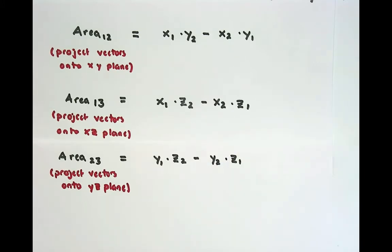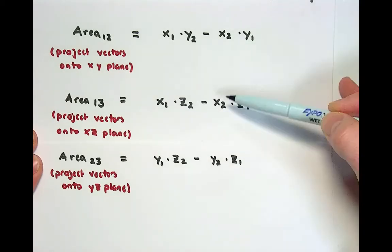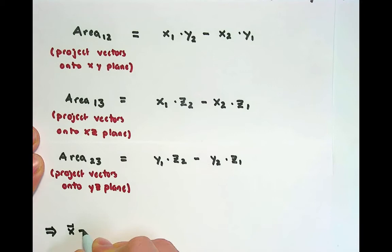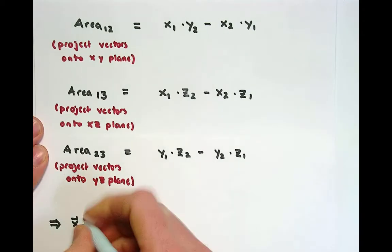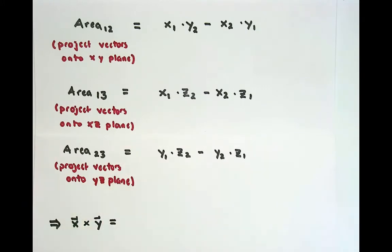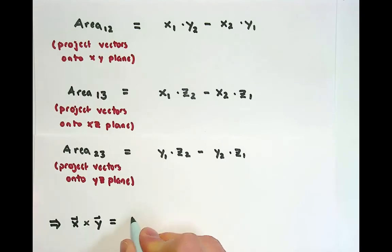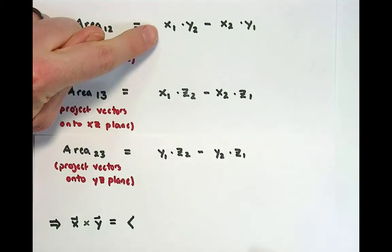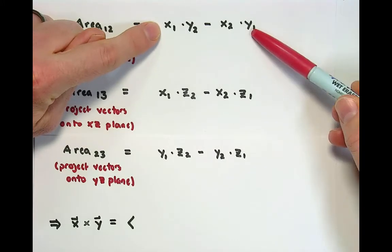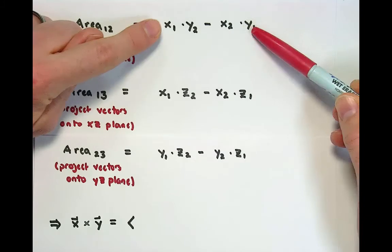This came from the formula from our last video. Now the question is: we have three different components and we want to store these components as a vector, which we're going to call the cross product between x and y. The question is where are we going to store each of these components? We have three choices — we could put each in the x, y, or z component.